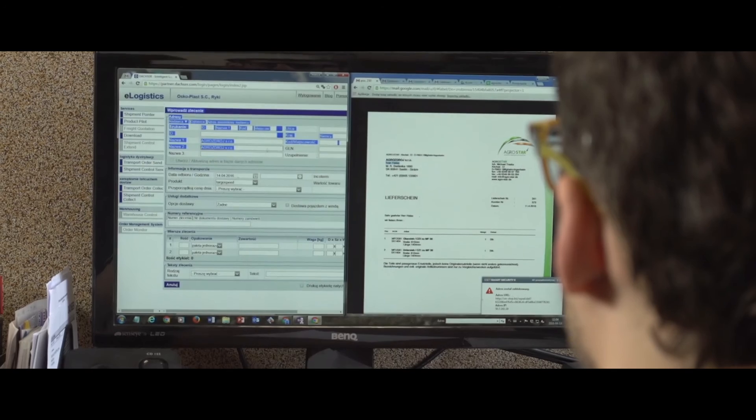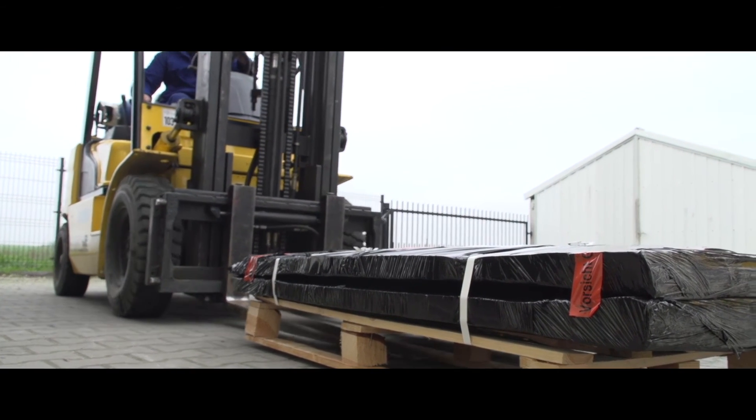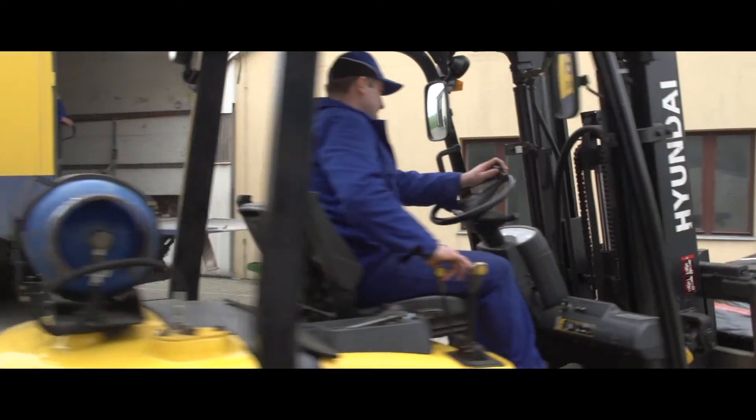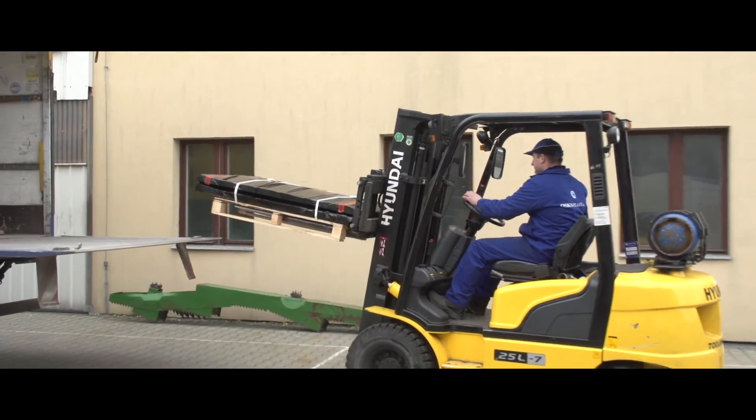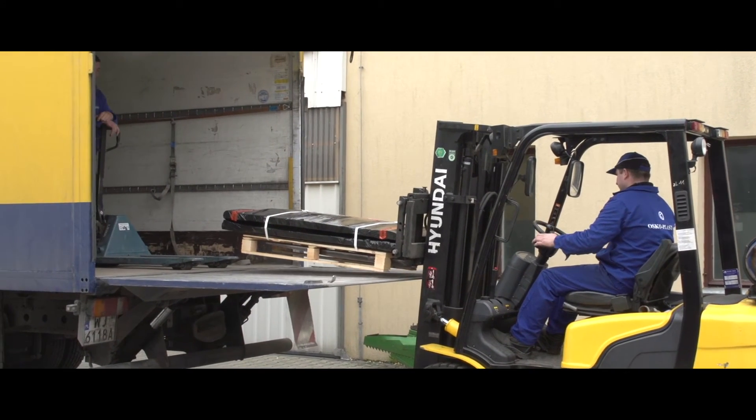Mocnym punktem firmy jest prawidłowa organizacja i logistyka. Przygotowane sita bądź inne wytwory produkowane przez OSKO Plast są odbierane przez kuriera i trafiają do wielu państw z całego świata. Służą z powodzeniem głównie rolnikom, którzy chwalą trwałość sit i profesjonalizm ich wykonania.